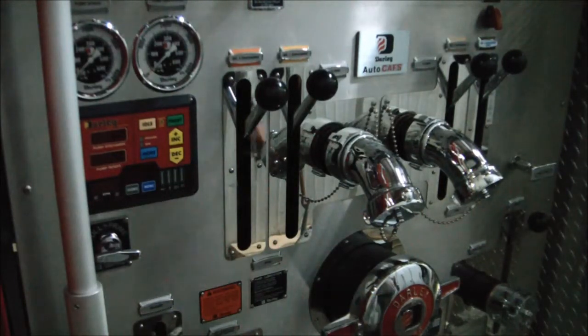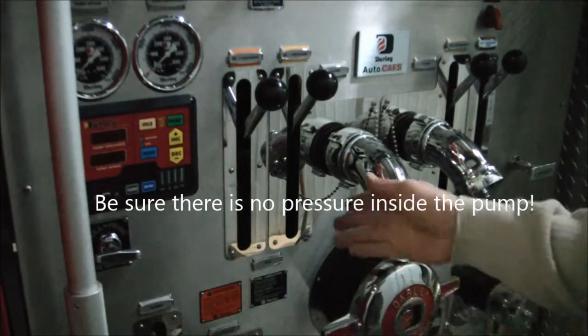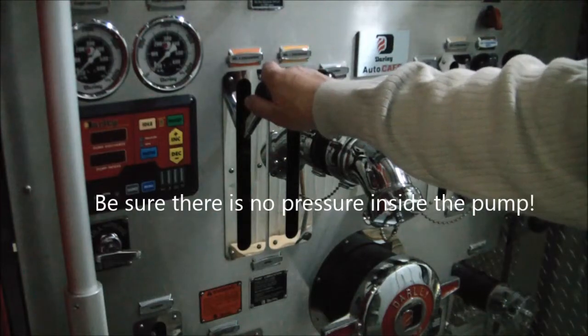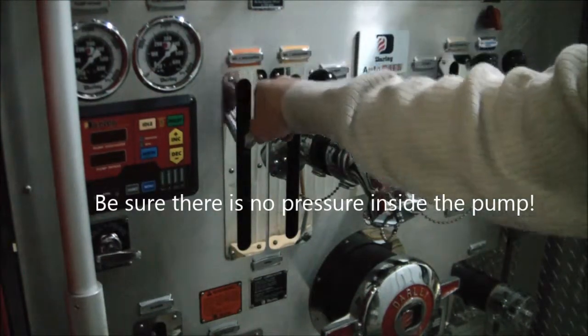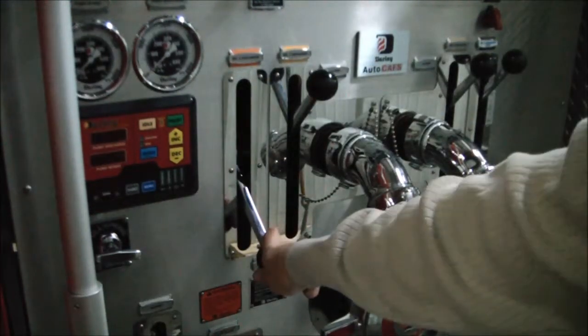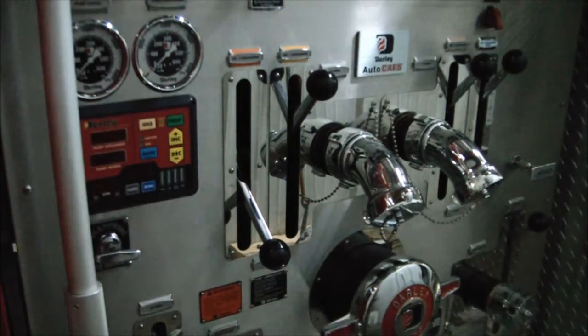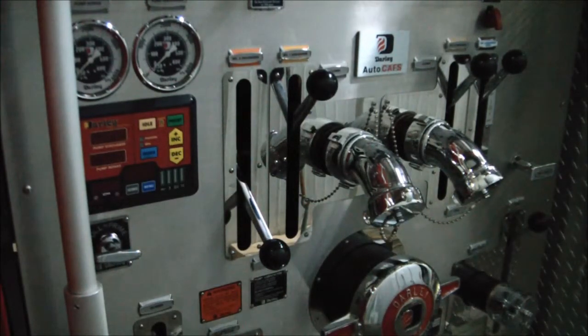Now obviously we can only do this with the pump disengaged and shut off, no pressure in the pump, so when we open this discharge valve that'll open that valve completely on the other side so we can shine our flashlight in and get a good view as to the condition of the anode. But again obviously you can only do this when the pump is disengaged when you're sitting in the station.